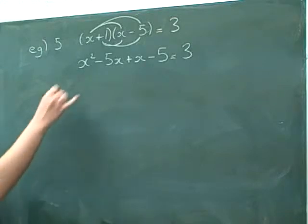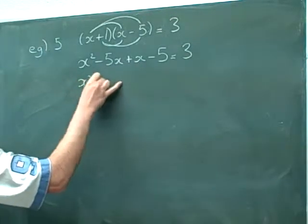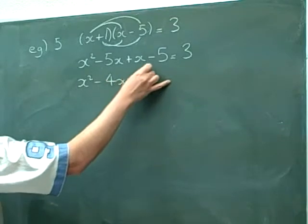We can then simplify. So negative 5x plus x is negative 4x.